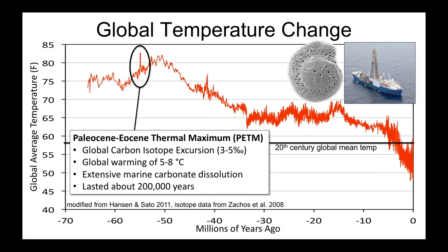Here's global mean temperature today, more or less. The first thing that pops out at anybody is that most of the last 65 million years have been a lot warmer than today. We're in the middle of a period of interglacial fluctuations, and of course we are also in a period of rapid global warming.